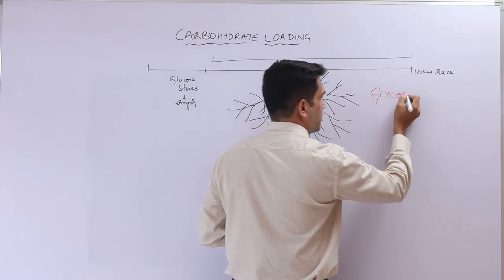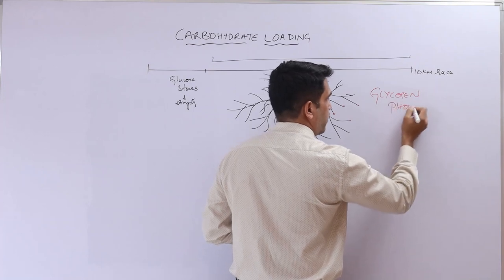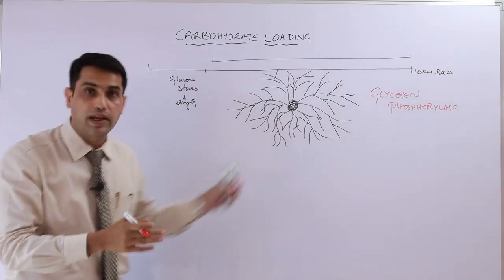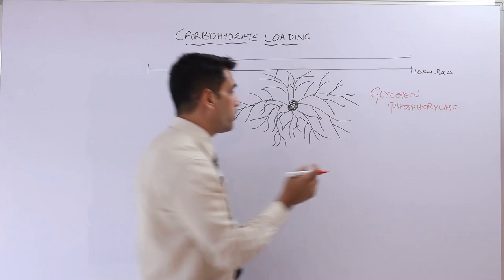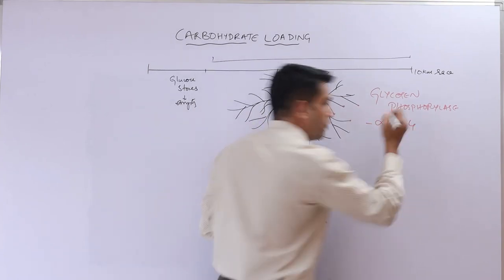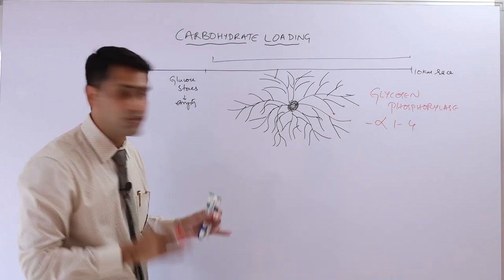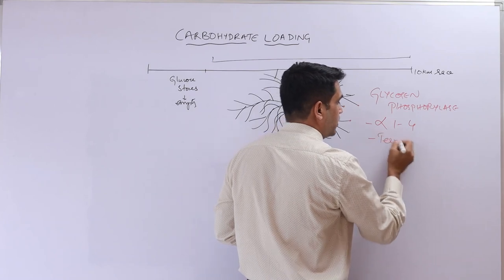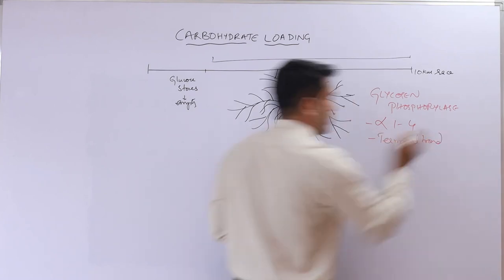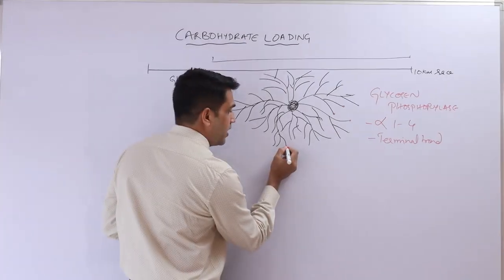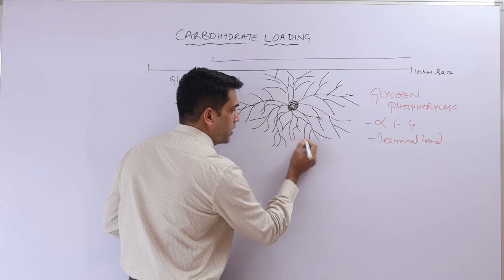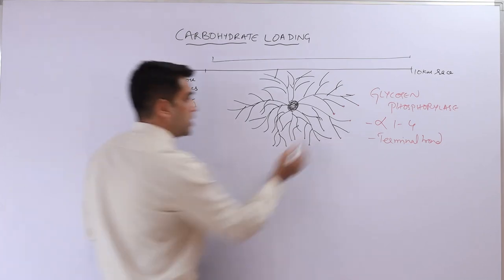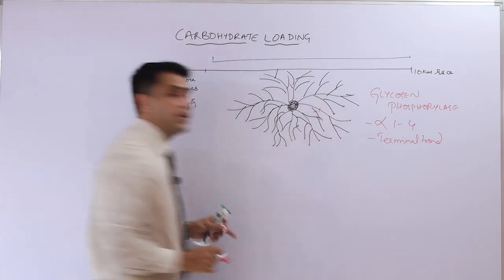Glycogen phosphorylase is the principal enzyme breaking glycogen down. Its first key property is that it acts only on alpha 1-4 bonds, not on the branch points which are alpha 1-6. The second important property is that it only acts on the terminal bond — meaning it can only act on branch ends, not in the interior of the glycogen molecule.